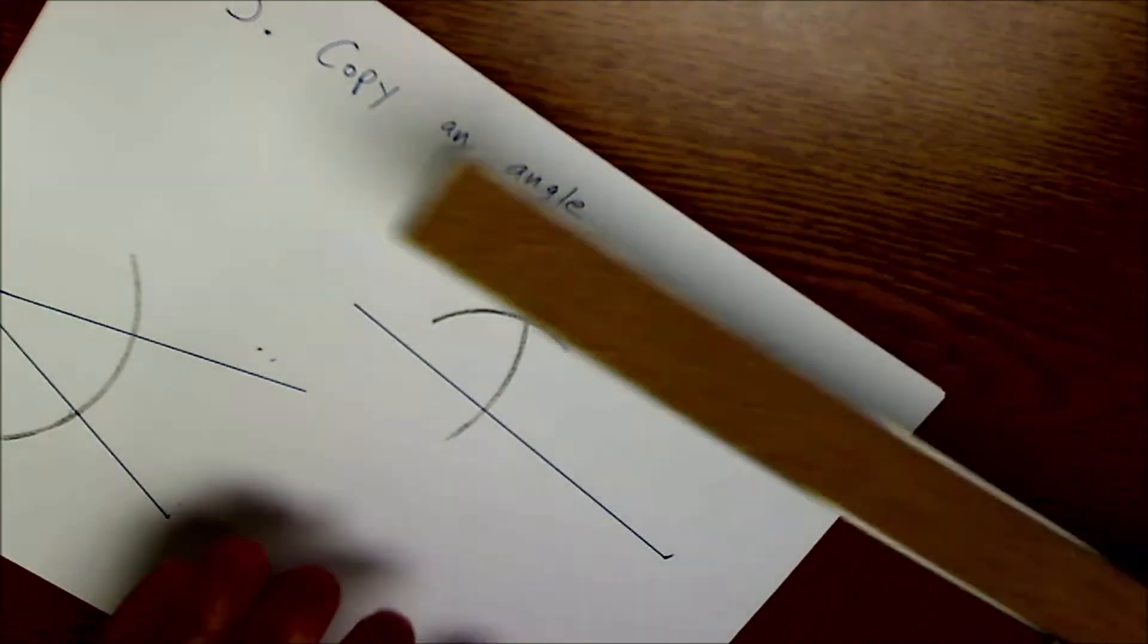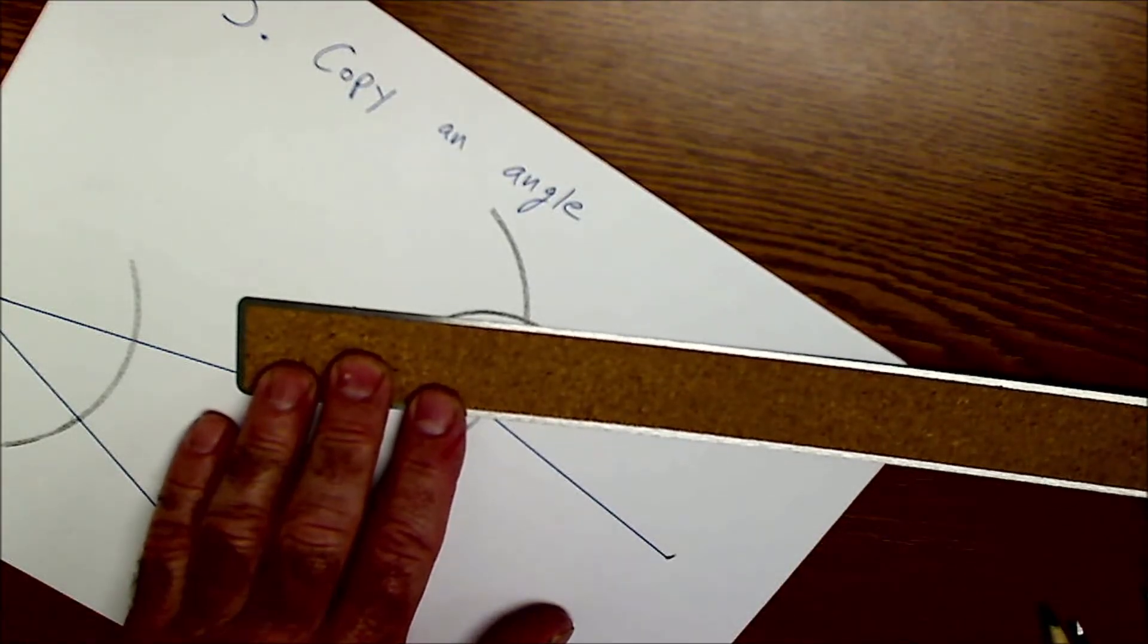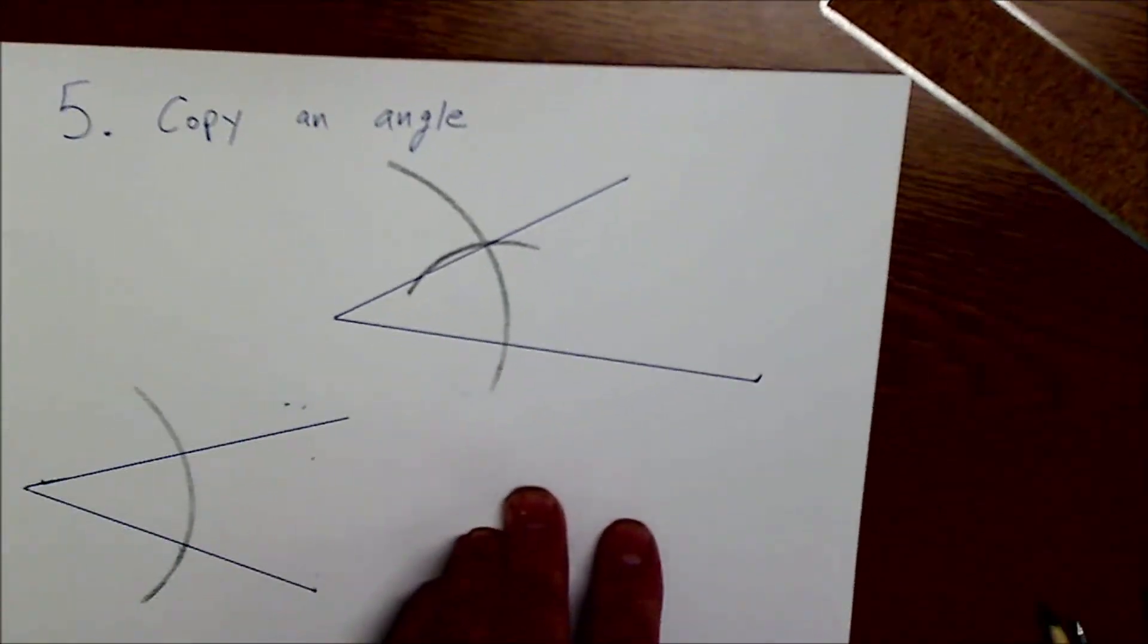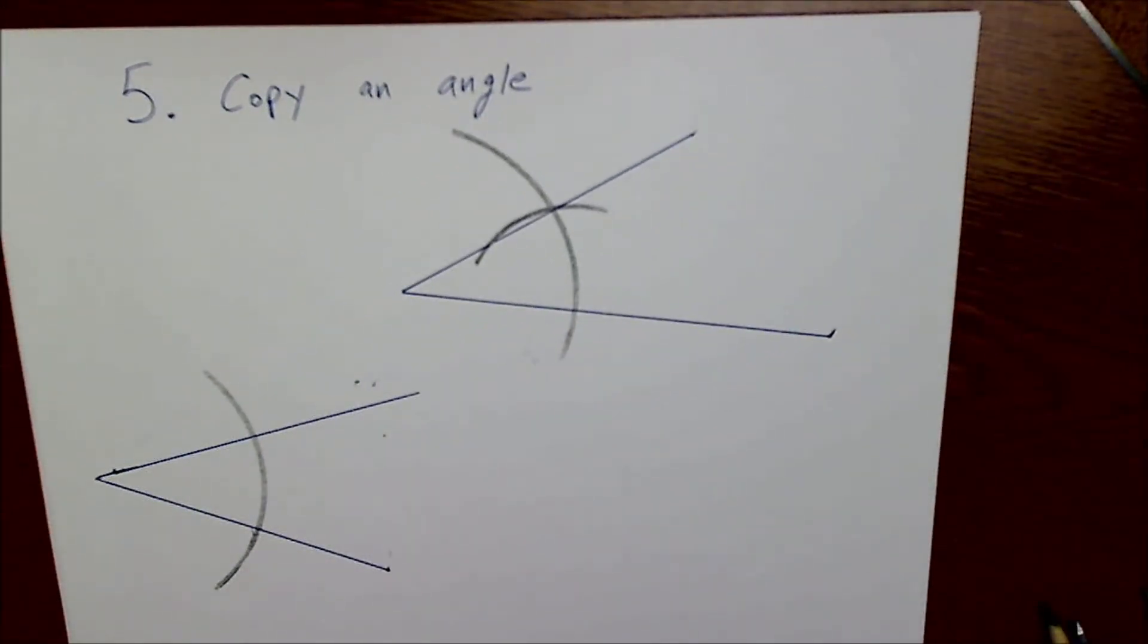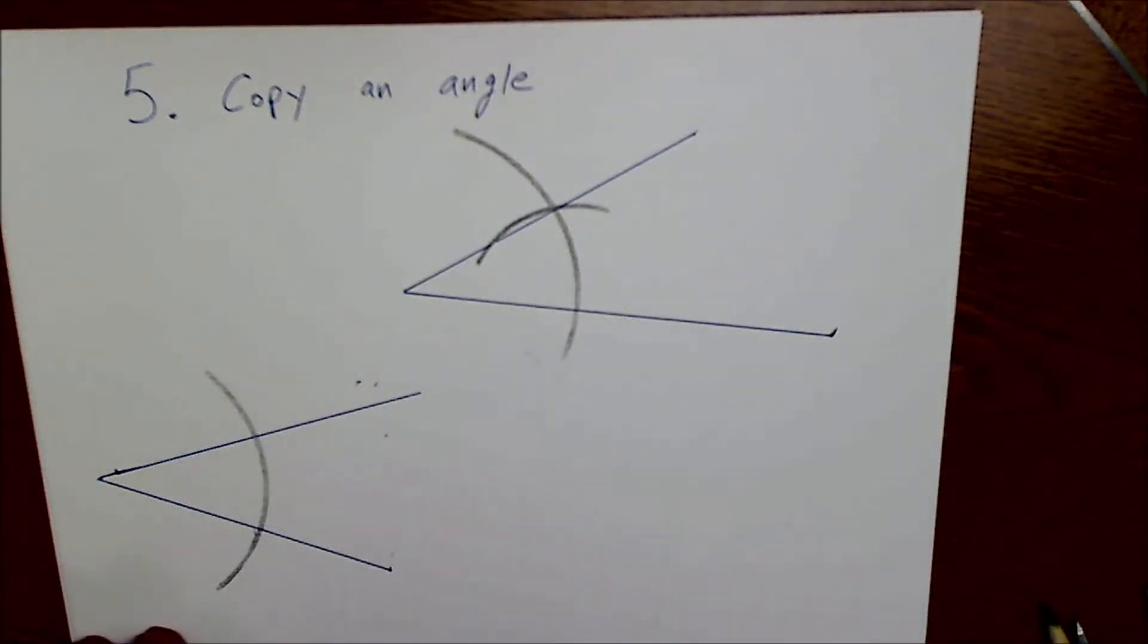So now that I've transferred that, that point of intersection, and the vertex will be right there and there. And I can draw that right there. And that's number five, copy an angle. This angle measure is equal to this angle measure right there.